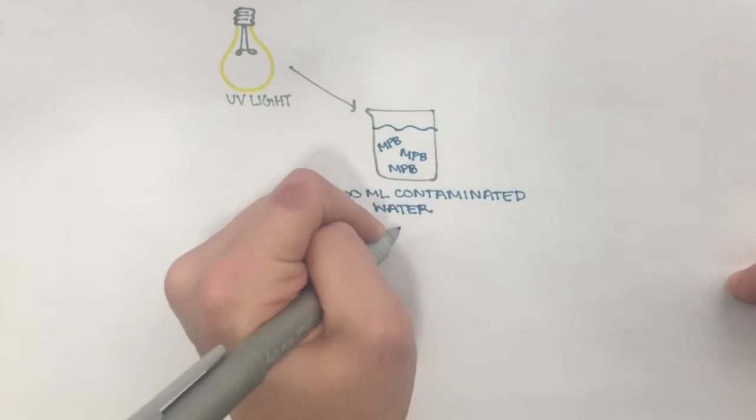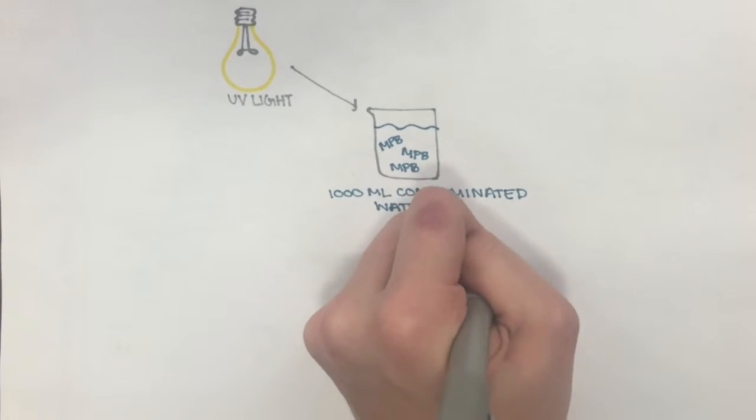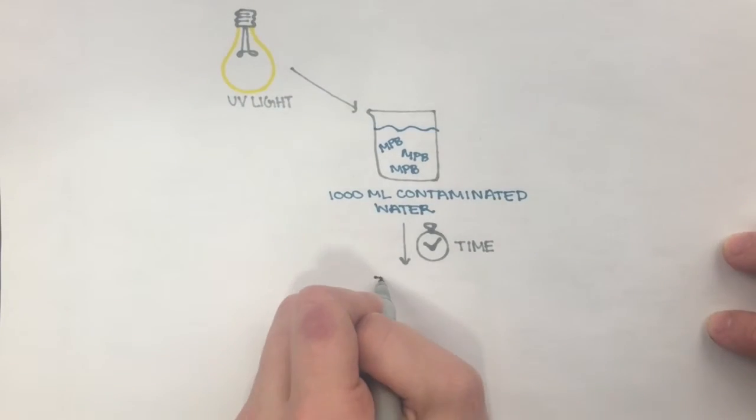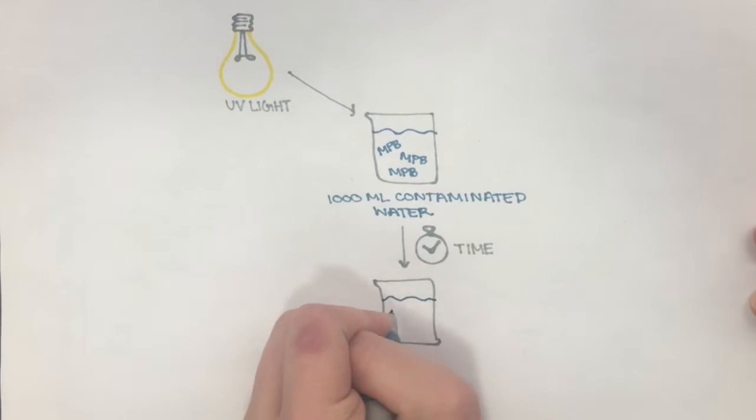Upon completion, the solution is then tested to determine the final concentration of methylparaben in the water. In every trial, the final concentration was much lower than that of the initial polluted water solution, as multiple varying concentrations were tested.